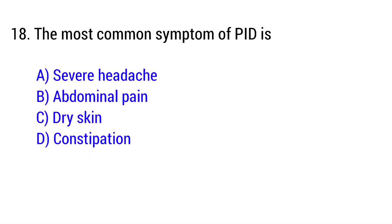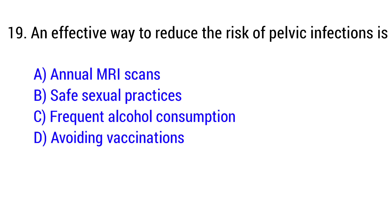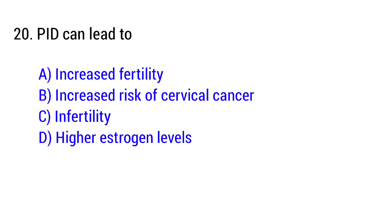Question number 18: The most common symptom of PID is — the right answer is Option B: Abdominal pain. Question number 19: An effective way to reduce the risk of pelvic infections is — the right answer is Option B: Safe sexual practices. Question number 20: PID can lead to — the right answer is Option C: Infertility.